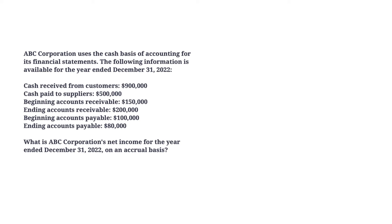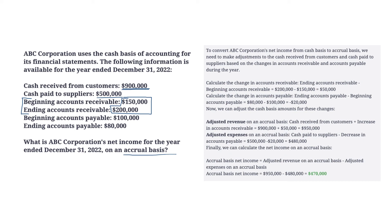Now let's look at a similar practice question, but this time AR increases instead of decreasing, and AP decreases instead of increasing. We're still looking for net income under the accrual basis. We have cash received of $900,000 and cash paid of $500,000. AR starts at $150,000 and ends at $200,000. This means we had a debit to AR of $50,000 and a credit to revenue of $50,000, so we add $50,000 to the $900,000 cash received, giving us $950,000 of accrual revenue.